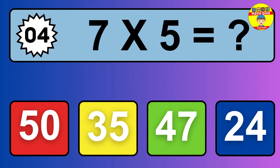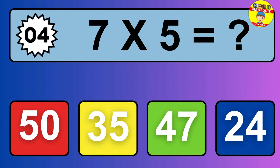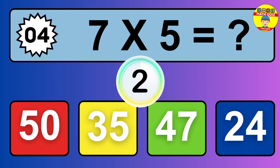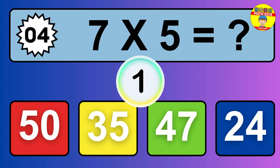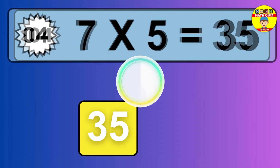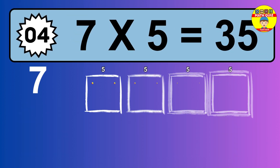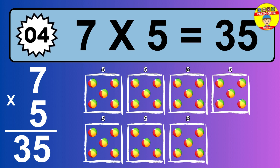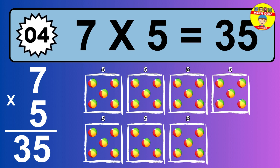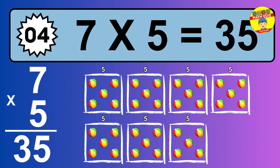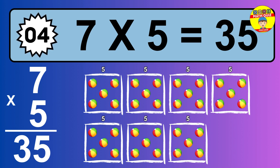Question 4. 7 times 5 equals what? The answer is 7 times 5 is 35. To calculate, we have 7 groups with 5 balls each one. So, how many balls do we have? 35 balls.